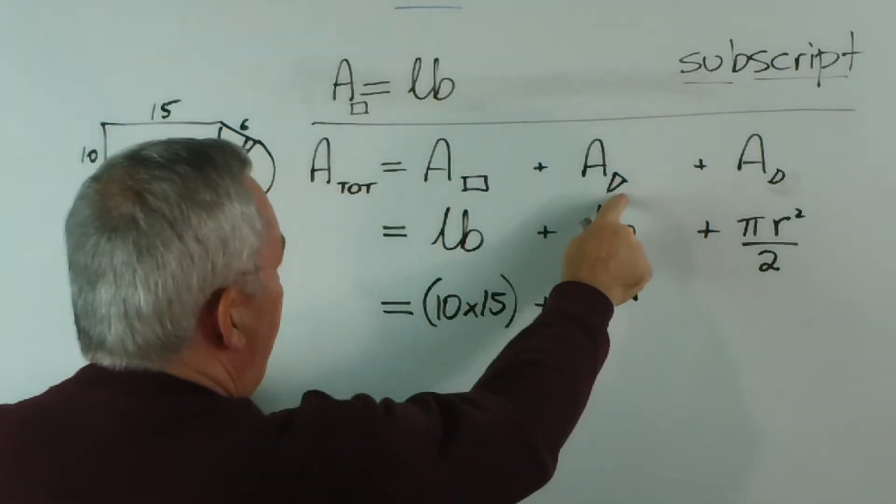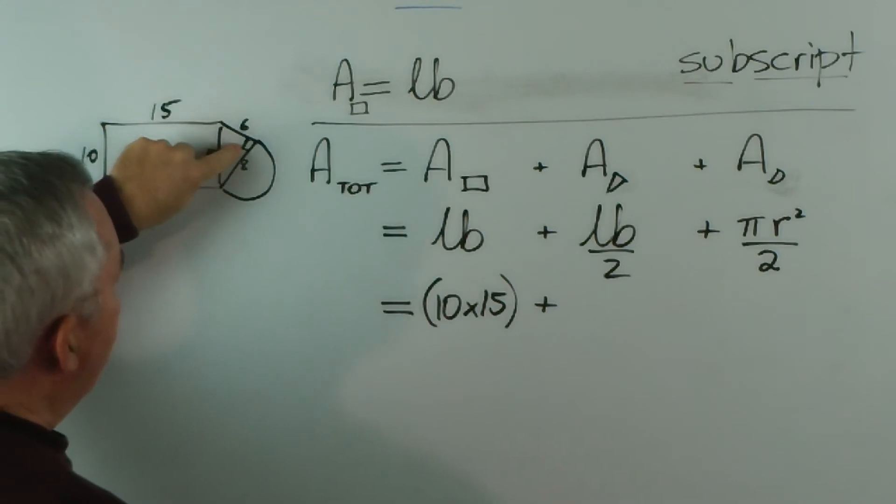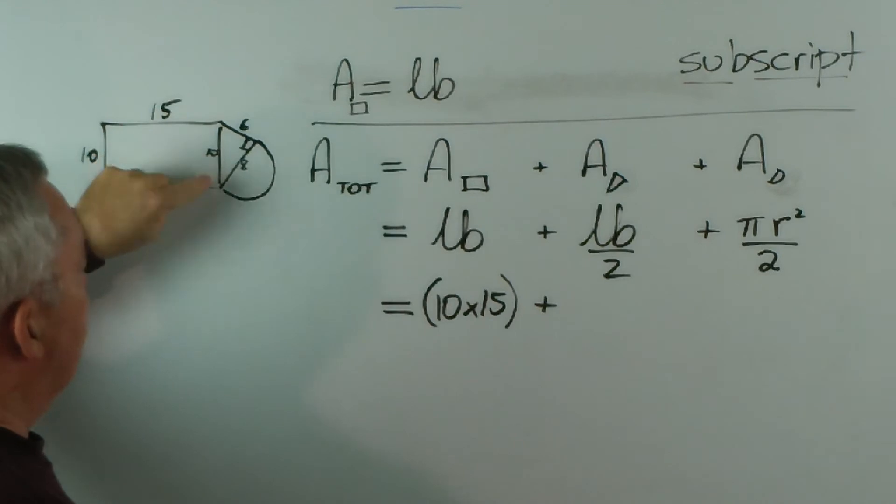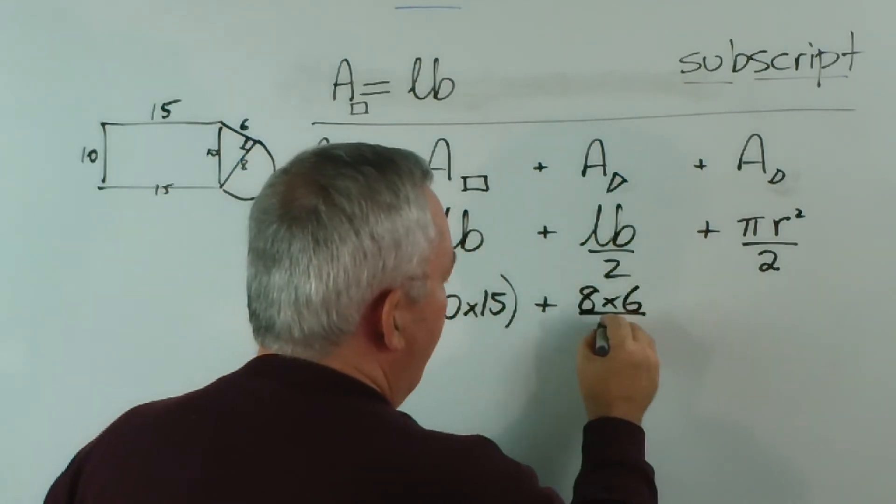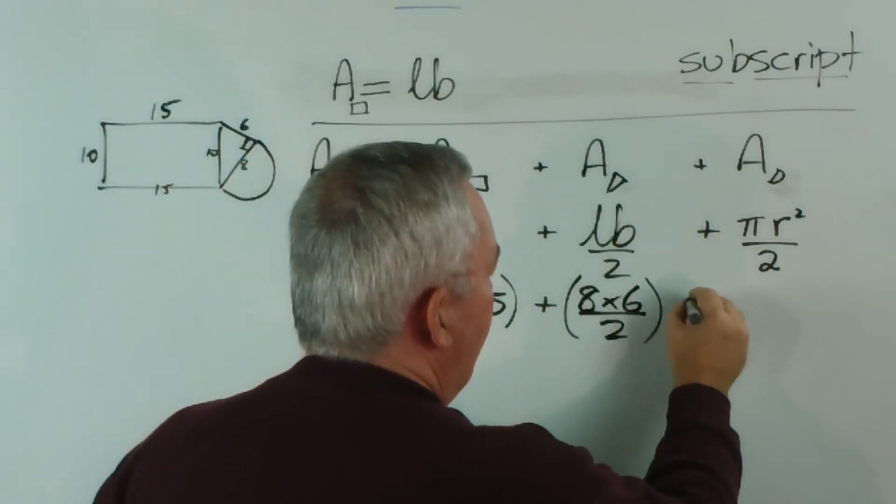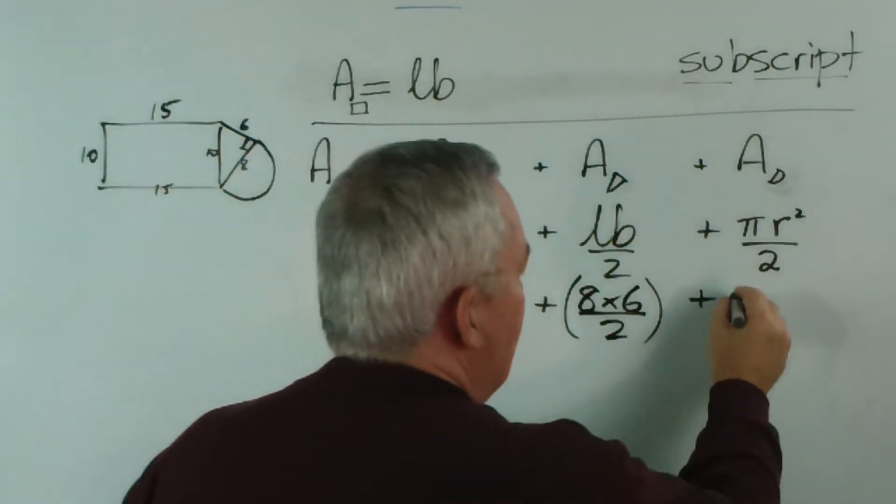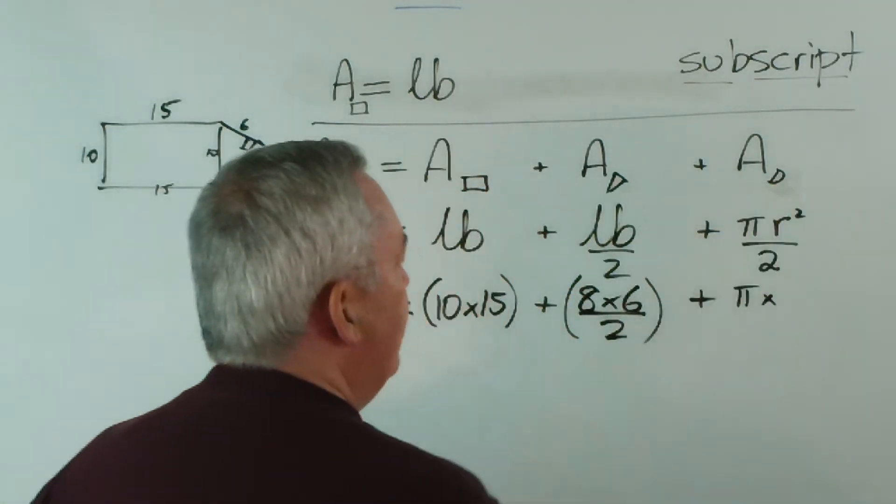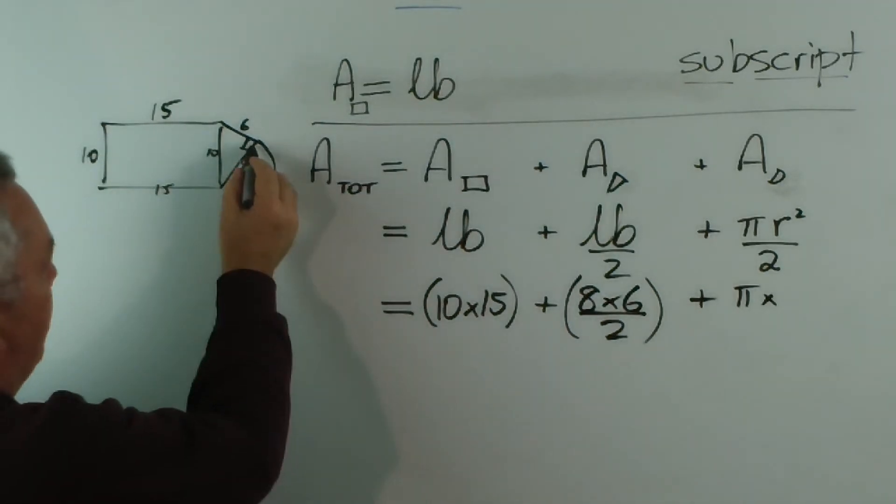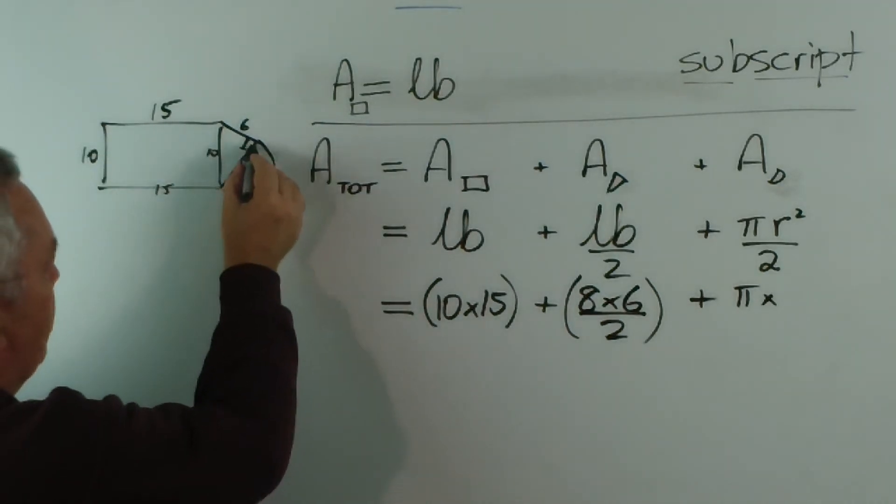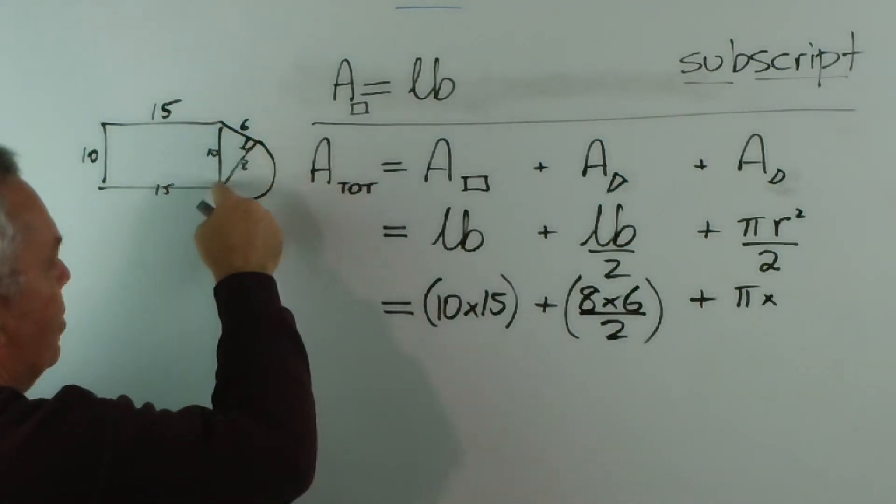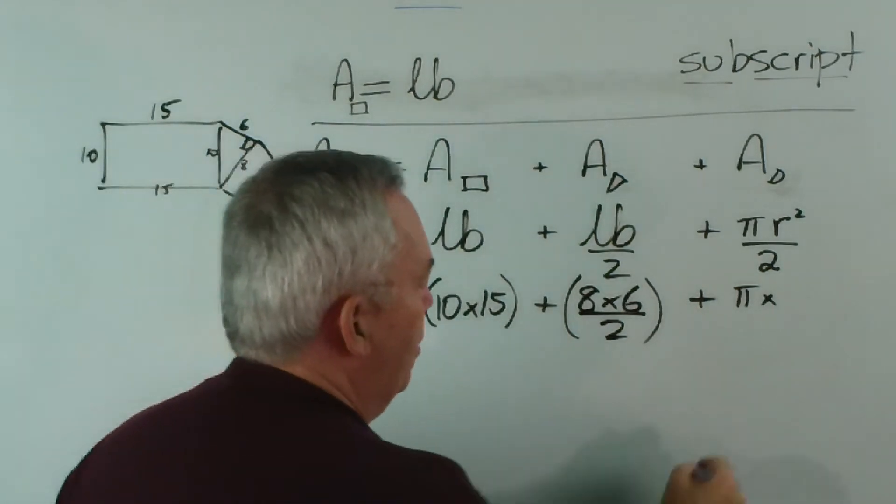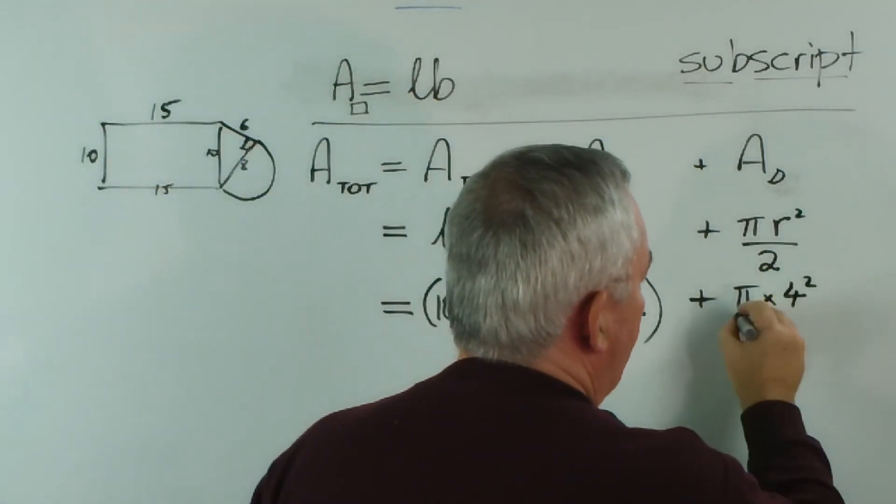Length by breadth of the triangle. Well, there's our right angle. So we need the two lengths that are attached to the right angle, not this one over here. It's 8 times 6 over 2, and I'll put parentheses around that. And for the last one, it's pi times, now what's the radius of our semicircle? Well, our diagram shows that it's eight units, let's call them centimetres, across the circle. So the radius must be half of eight, which is four. So it'll be four squared over two.